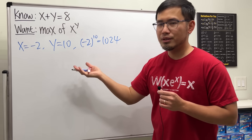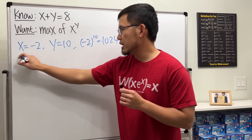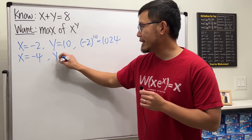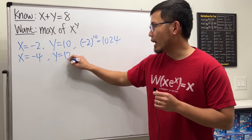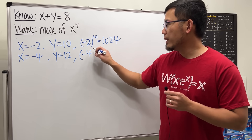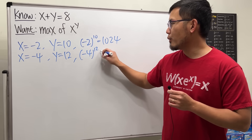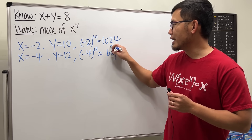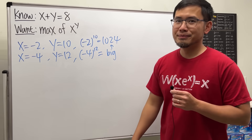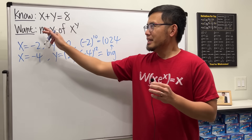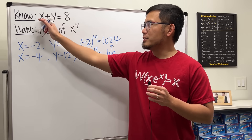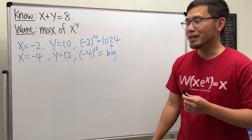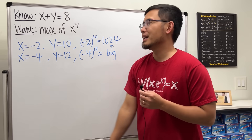Can we make it bigger? Yes. x equals negative 4, y equals 12, and negative 4 raised to the 12th power — I don't know what it is, but it's for sure bigger than that. So as you can see, if there's no conditions on x and y, this question is not that fun, because you can just do things like that. So let's impose a condition.